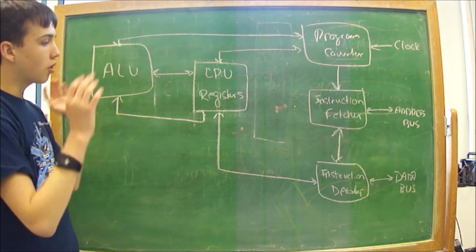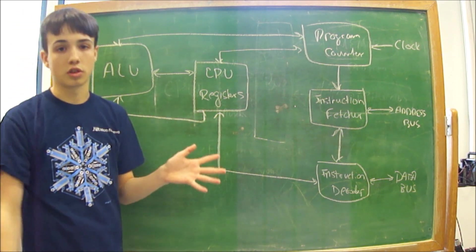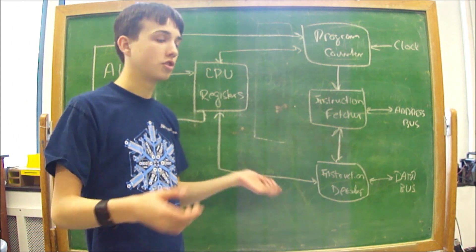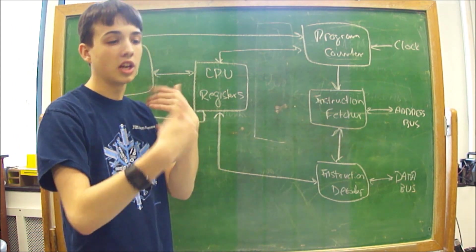Here we have a very oversimplified version of how a CPU works. It starts with a program counter. The program counter's job is to receive the clock signal. It's the up, down, up, down, cycle through.